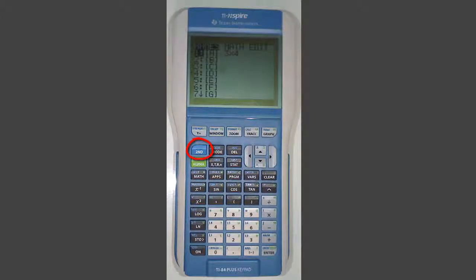Press 2nd, X to the negative 1 or matrix in blue. Scroll to the matrix you created and press Enter. Close the parentheses and press Enter.